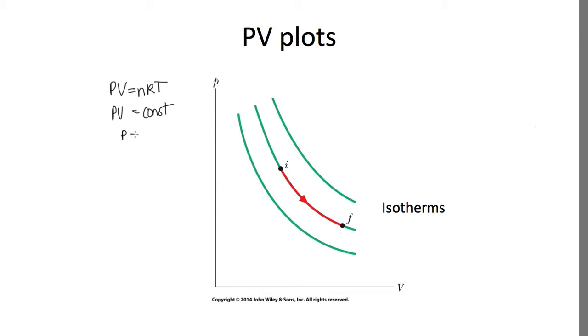And so we can write this as P is equal to the constant over V, which a lot of you will probably recognize as the formula for a hyperbola. Because if we write this as Y is equal to K over X, in this case, P is on the y-axis and V is on the x-axis, this is the way you usually write a hyperbola. So isotherms, or constant temperature lines, on the PV plot are drawn as hyperbola as in this diagram here.